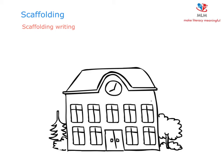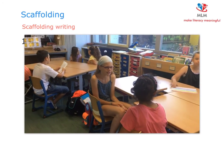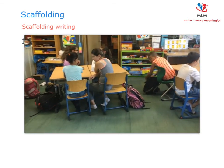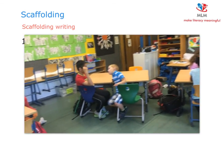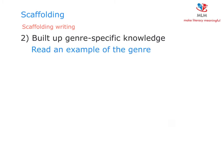Now I want to give you an example of how this writing circle of scaffolding works in the classroom. At the beginning of the writing process, it is important to get the topic-related knowledge. The next step is to build up genre-specific knowledge, which can also include reading a text of the same kind.